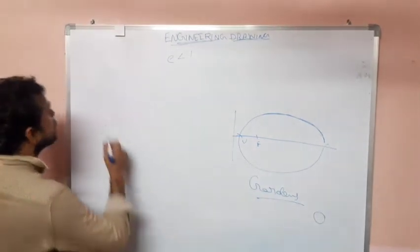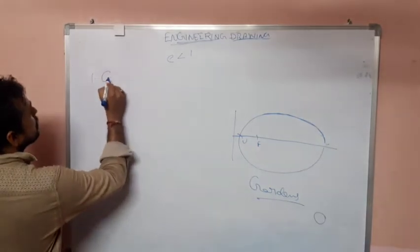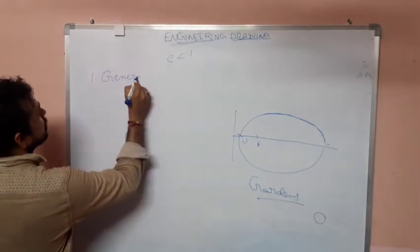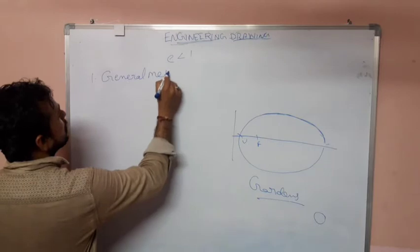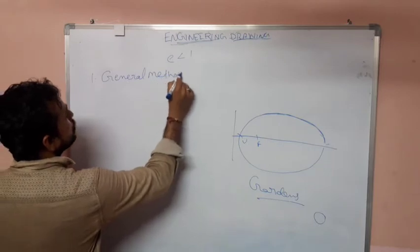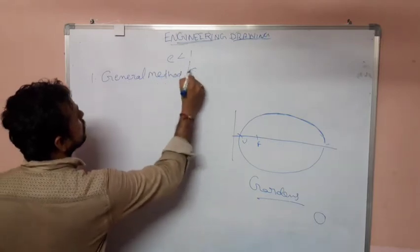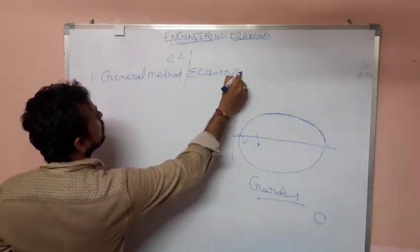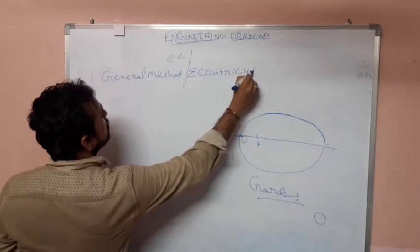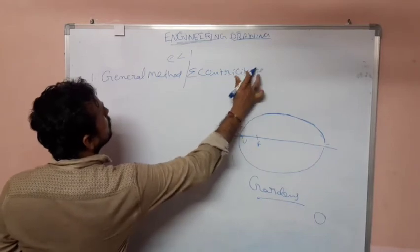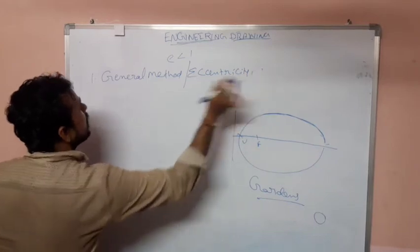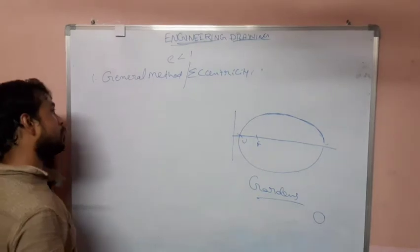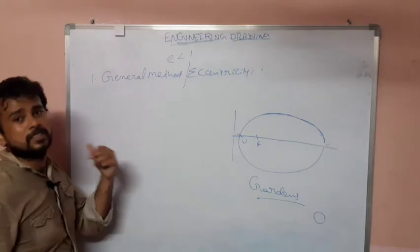The first method is the general method. It is very important but a little tough. We use the eccentricity method. This is common for all conic sections.